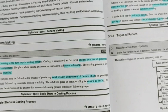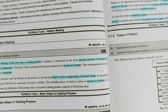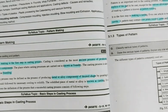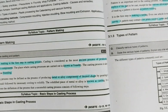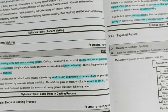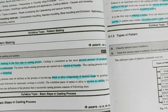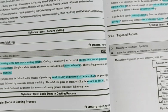The casting process may be defined as the process of producing metal or alloy components of desired shape by pouring molten metal into a mould, followed by necessary cooling to solidify. The solidified piece of metal or alloy is known as casting. It is clear from the definition that a successful casting process consists of following steps.